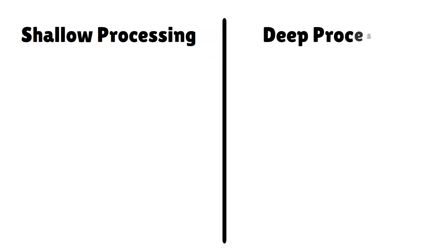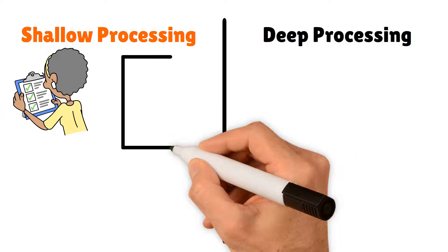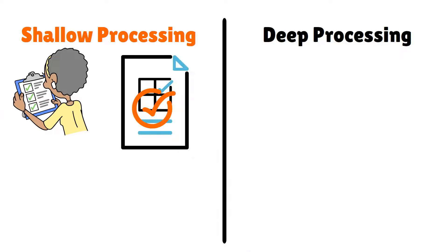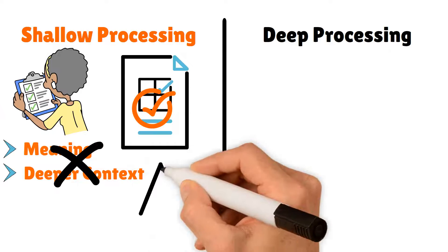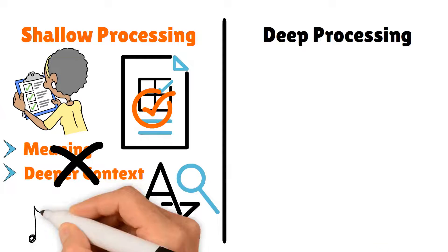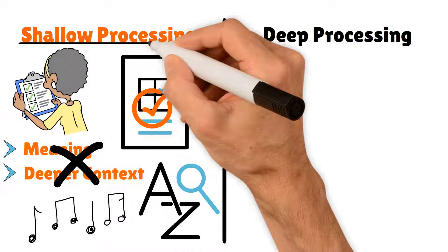Shallow processing and deep processing are two different ways our brains handle information. Shallow processing focuses on the surface level of information. It involves recognizing the basic features of an item without engaging in its meaning or deeper context. For example, when we look at a word and just consider its appearance or sound, we are using shallow processing.